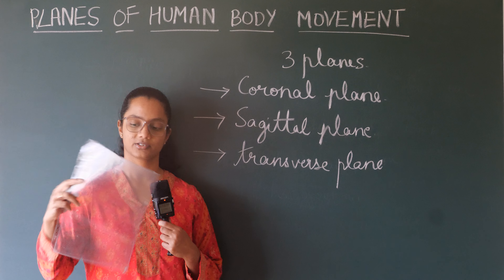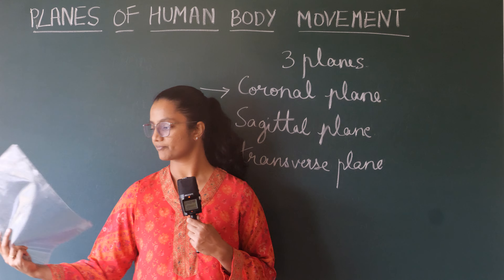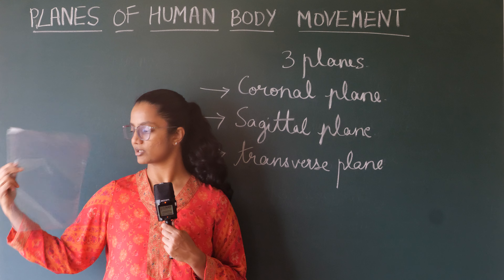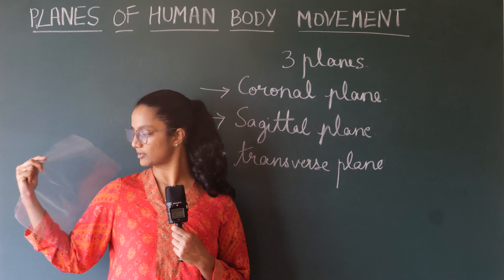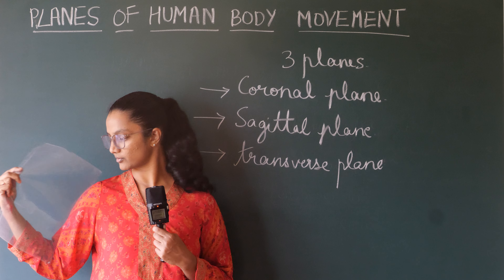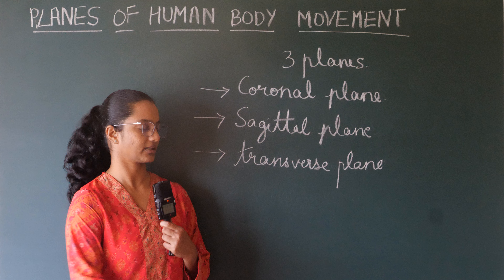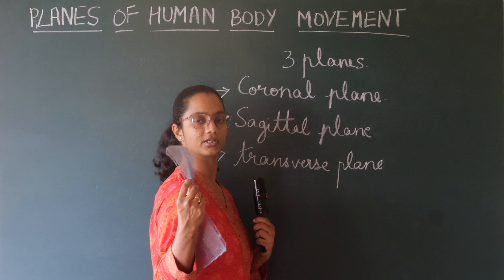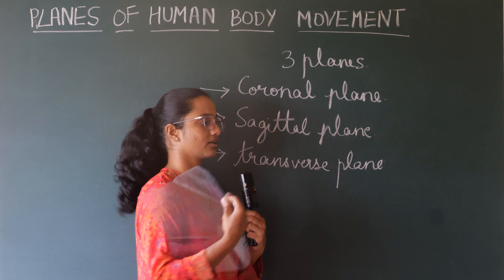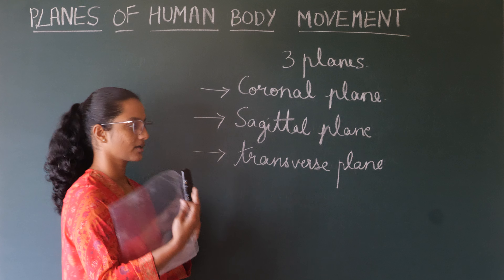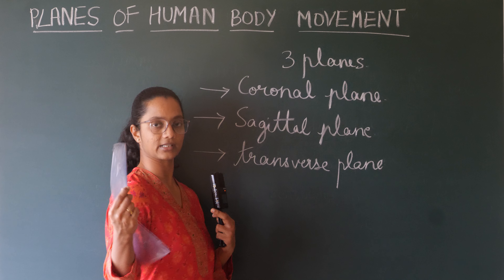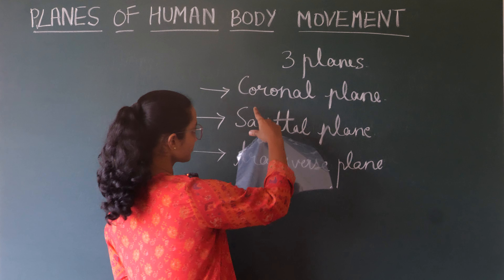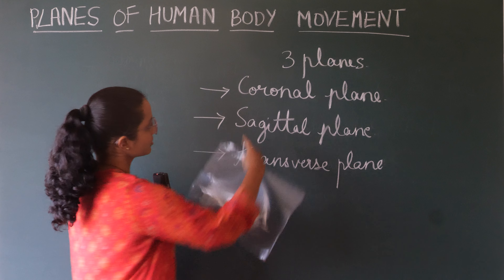Consider this to be a plane — it's imaginary. This plane passes through my body and cuts my body exactly into half, from my right side to my left side. So this plane is exactly cutting my body into two halves — front and back, anterior and posterior. This imaginary plane is known as the frontal plane or the coronal plane.